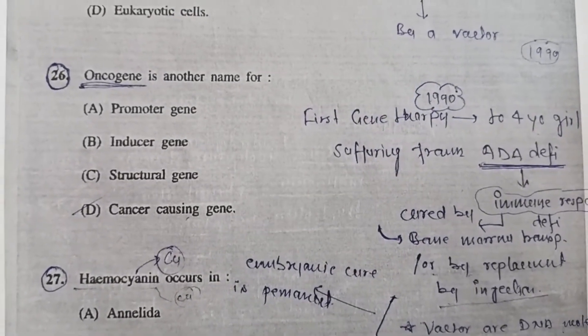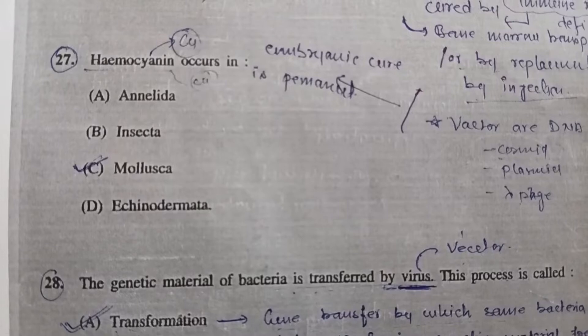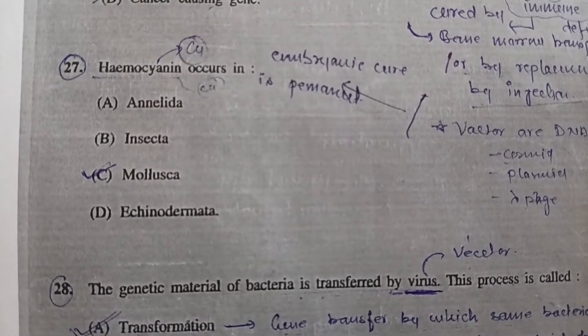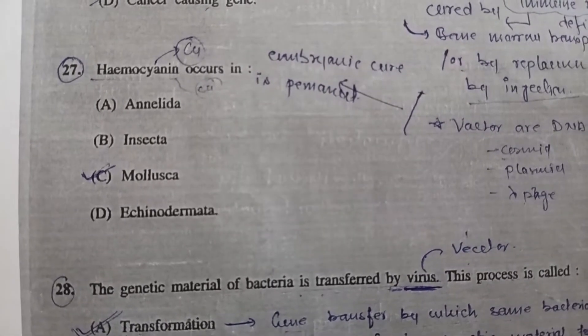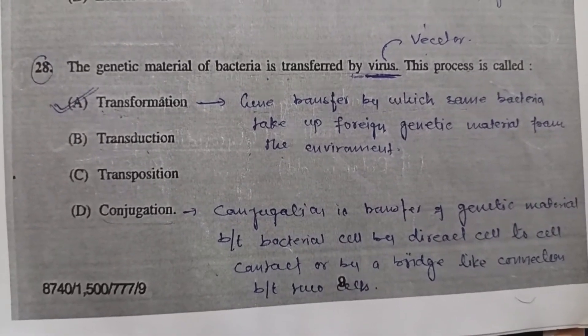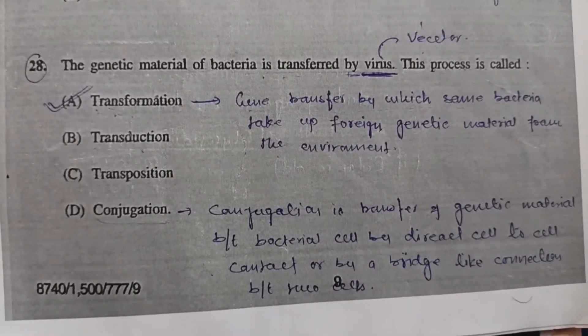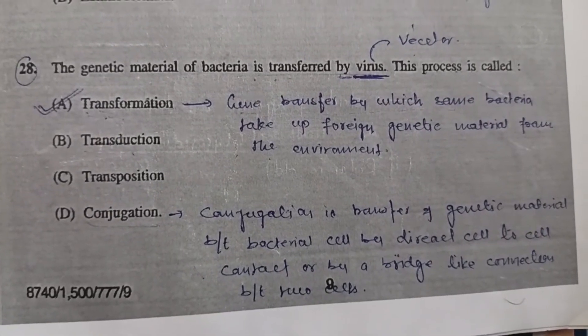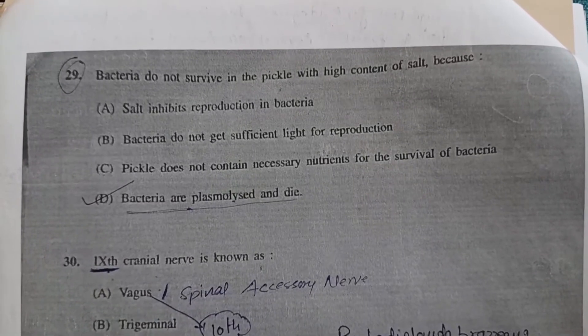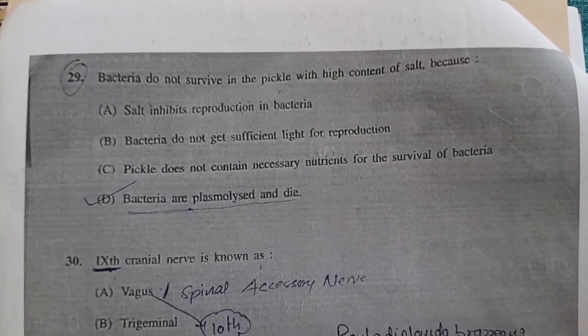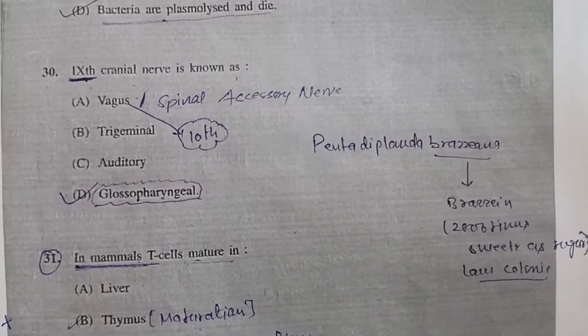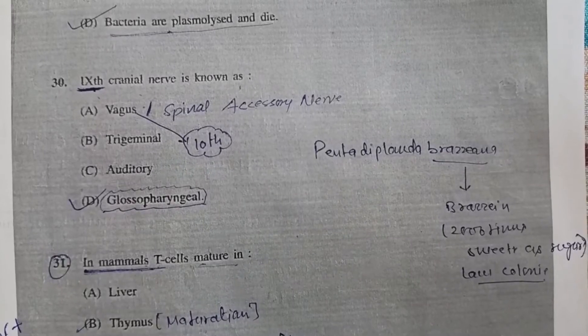Question 27: Hemocyanin is a pigment which contains copper, responsible for blue color of Mollusca, option C. Question 28: The genetic material of bacteria is transferred by virus, this process is called - A, transformation. Question 29: Bacteria do not survive in pickle with high content of salt because - Option D, bacteria are plasmolyzed and die. Question 30: Ninth cranial nerve is known as - Option D, glossopharyngeal.